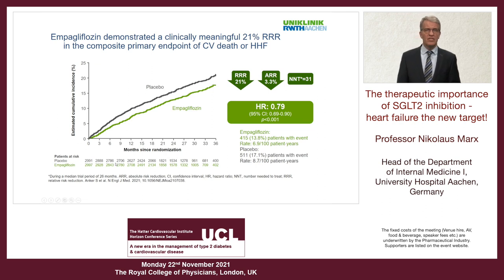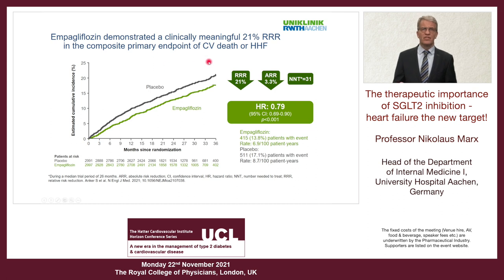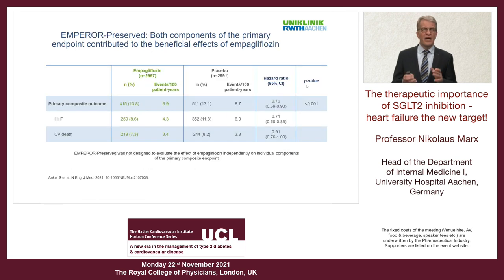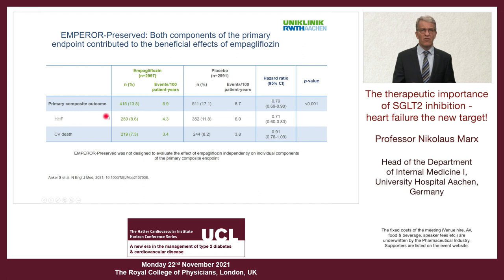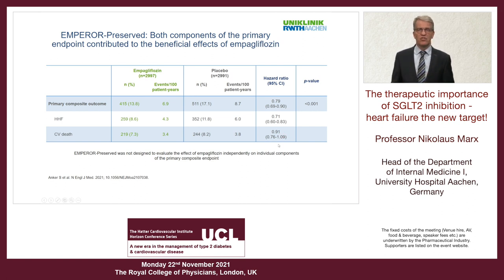The primary endpoint showed a highly significant reduction of the combined endpoint of CV death or heart failure hospitalization by empagliflozin, with a number needed to treat of 31 over two years. Looking at the single components, heart failure hospitalization was significantly reduced by 29%. CV death showed a clear trend, albeit not statistically significant — however, the study was not powered for that endpoint.